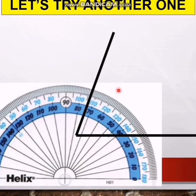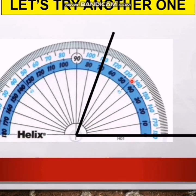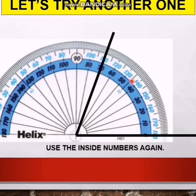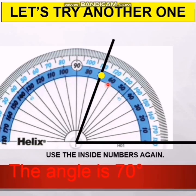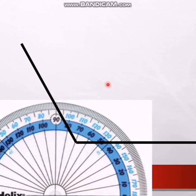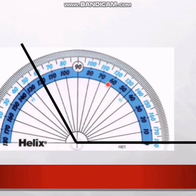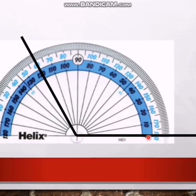Now let's try another example. Again we have a baseline and another line. I put the protractor exactly on the baseline. We use the inside numbers again because the baseline is on the zero of the inner scale. The other line is at 70, so this is a 70-degree angle.